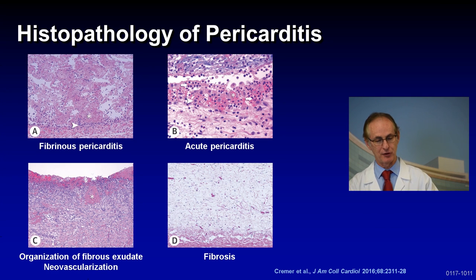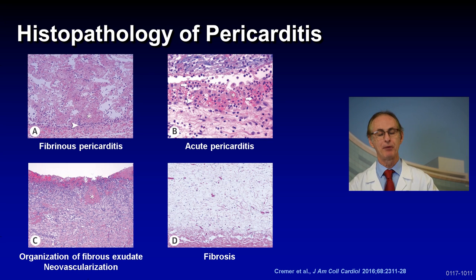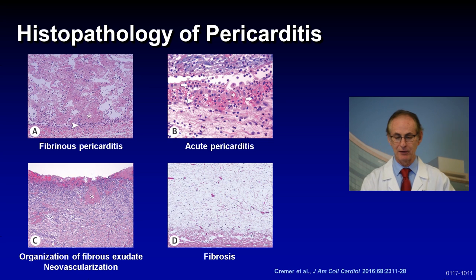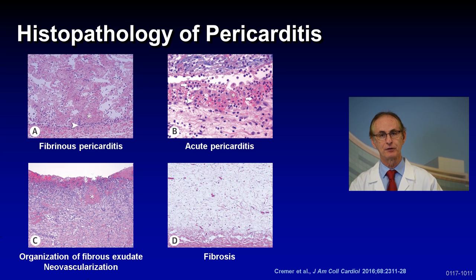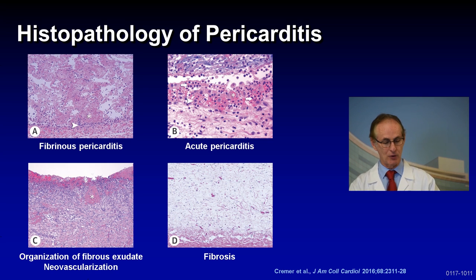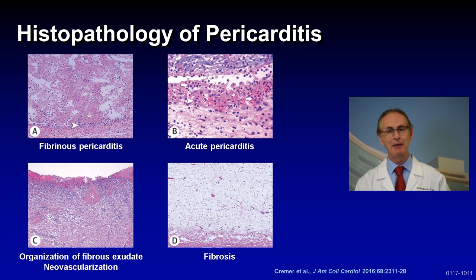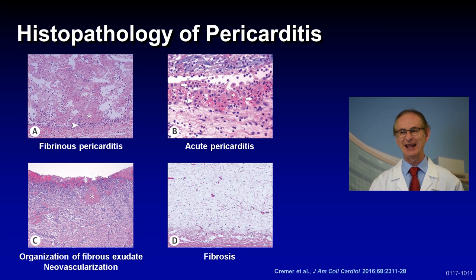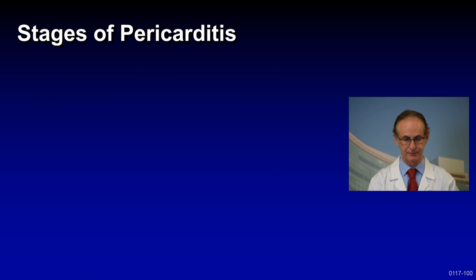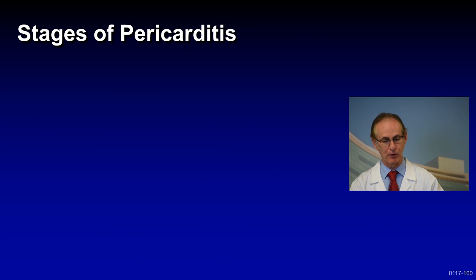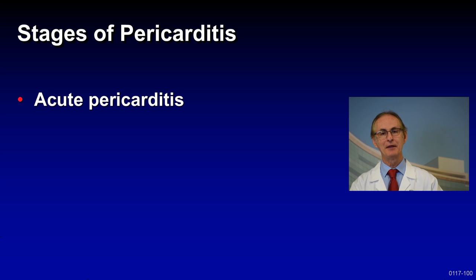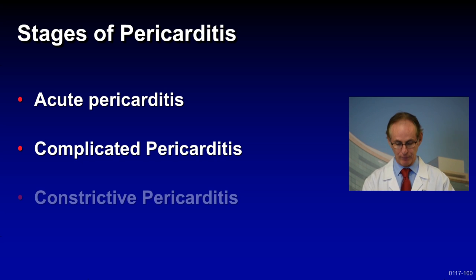The histopathology of pericarditis: on the upper left you can see fibrinous pericarditis with fibrin deposits in the pericardial space. Panel B shows acute pericarditis with influx of neutrophils into the pericardial space and disruption of the mesothelial layer. Panel C shows organization of the fibrinous exudate with neovascularization. Panel D shows end-stage fibrosis. To summarize the stages: you have acute pericarditis, which can lead to complicated pericarditis, including constrictive pericarditis.